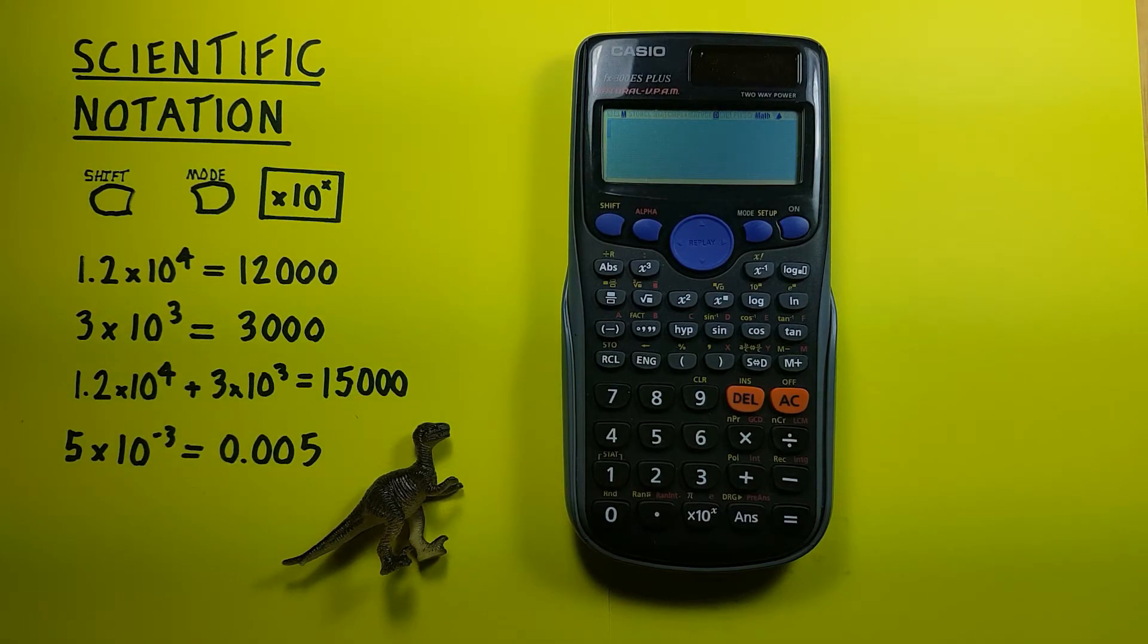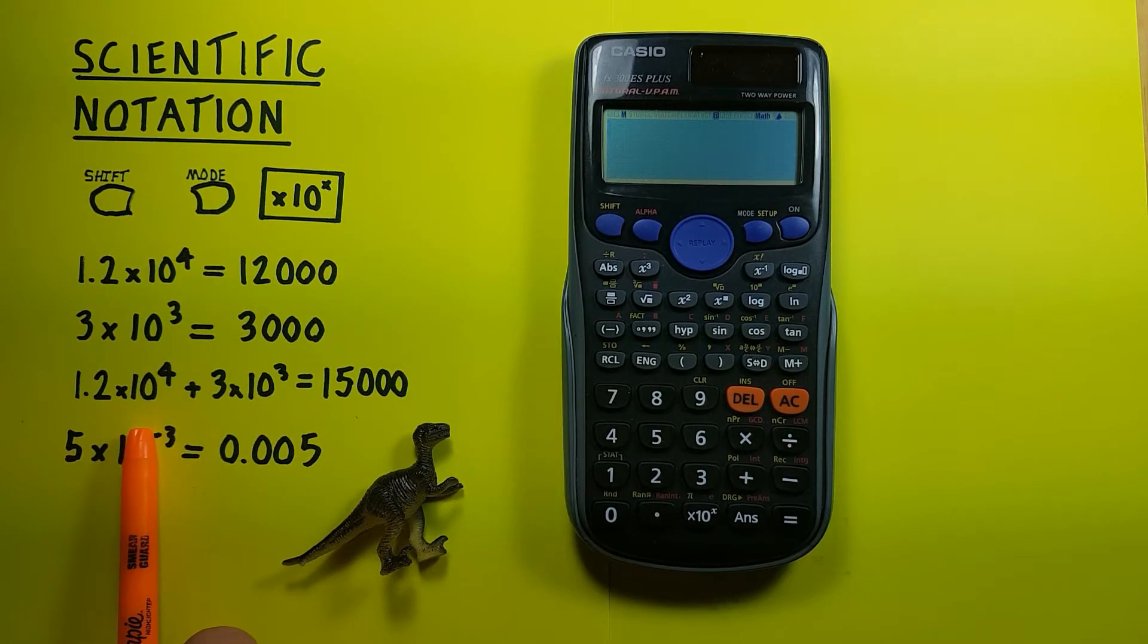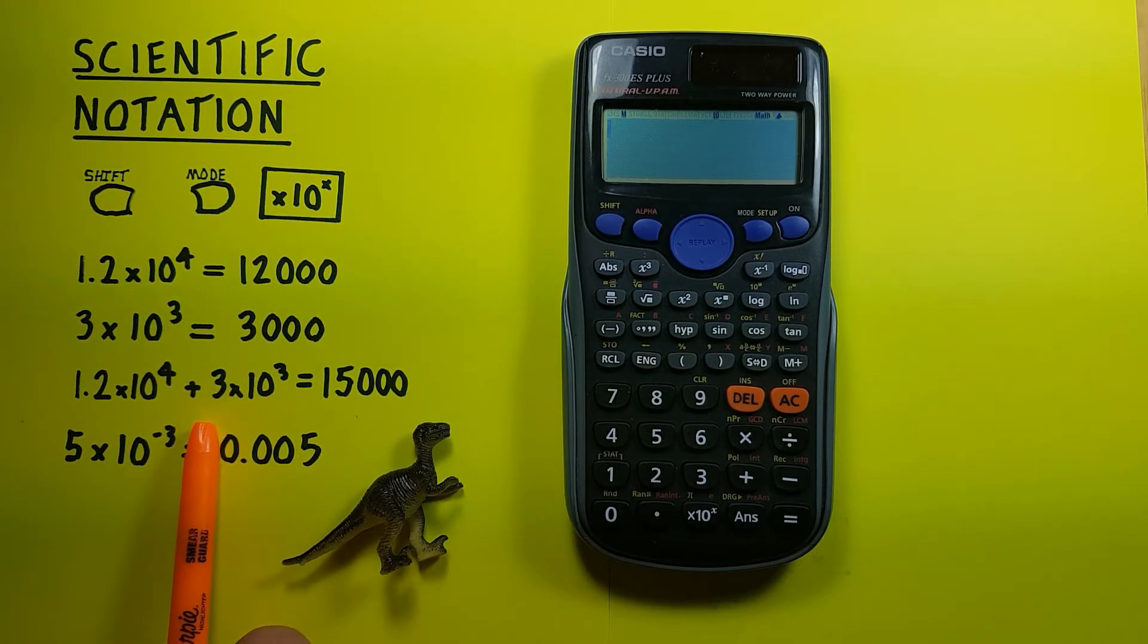We can also use this for calculations. For example, if we wanted to add 1.2 times 10 to the power of 4, and 3 times 10 to the power of 3, we could enter it like we did before.